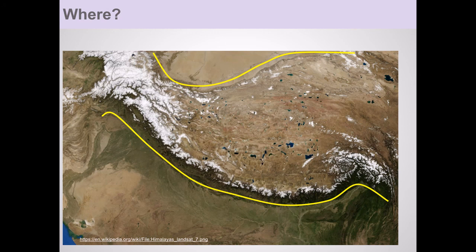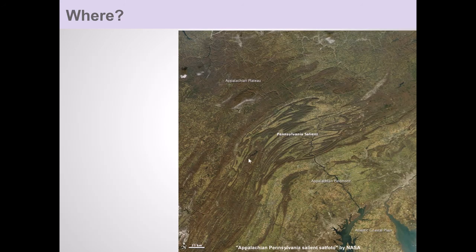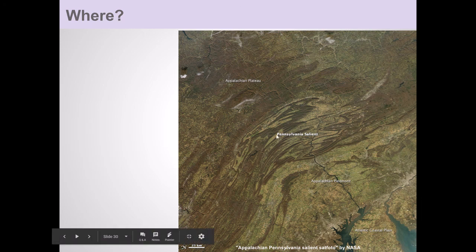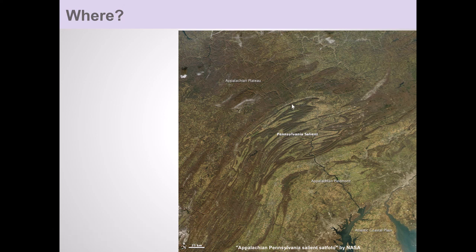All of this is wrinkled and folded in response to these two continents colliding, very much like what you see in the Appalachian Mountains, where you have these beautiful folds and wrinkles from a similar collision between two continents when Pangaea formed. The Appalachian Mountains are the remnant of a great mountain chain caused by a continent-continent collision.